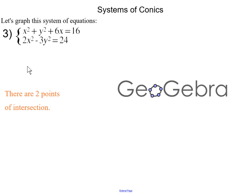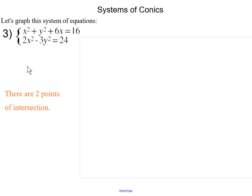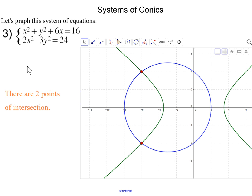Now let's graph the system. The blue graph is our circle and the green graph is our hyperbola. They intersect at two red points, so we have two points of intersection. We're going to solve those two points algebraically.